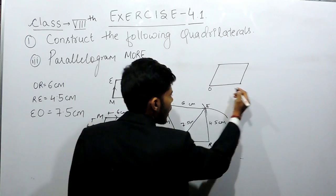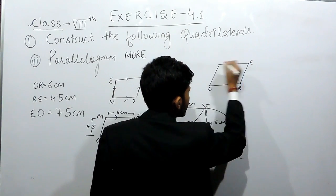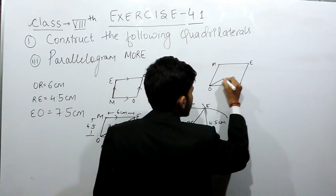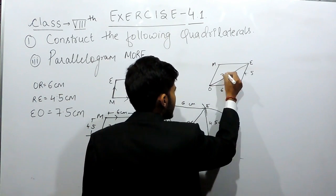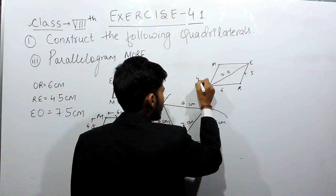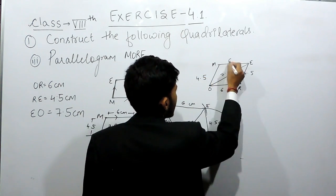This will be O, R, E, M. This will be the diagonal, and this will be 4.5, 6, 7.5, 4.5, and again 6.